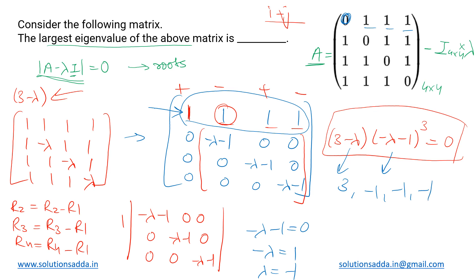The characteristic equation has roots λ = 3 and λ = -1 (repeated three times). The largest root is 3, so the largest eigenvalue of this matrix is 3.